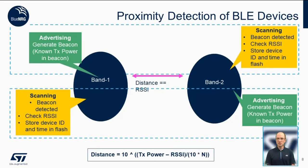Now let's describe the process between two nodes, which could be any type of device such as a band or a tag. The process is started by band 1 generating beacons with a nominal TX power. Band 2 scans and detects these beacons, checks for the RSSI, and stores the device ID and the time in flash. At the same time, it also advertises generating beacons, which in turn band 1 detects, checks for the RSSI as well, and stores both the ID and the timestamp in flash.